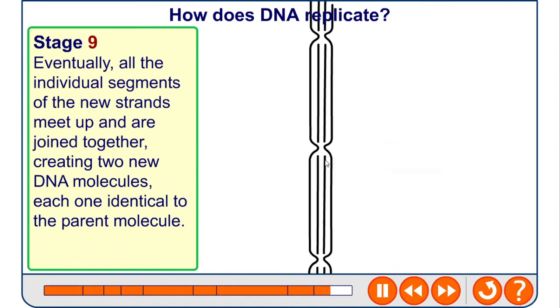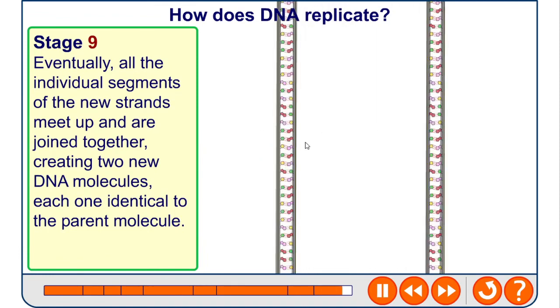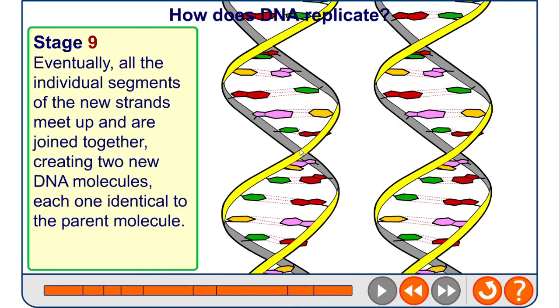These replication forks ultimately meet, and when that happens, the two daughter strands of the original parent DNA molecule are formed. Each one contains one strand from the original DNA molecule, and you now have two identical DNA molecules compared to the original parent molecule.